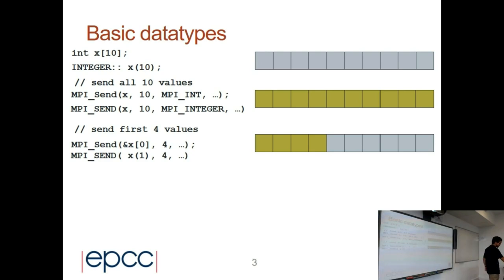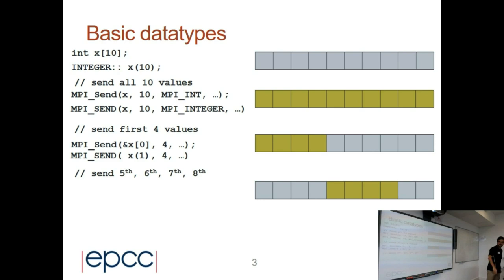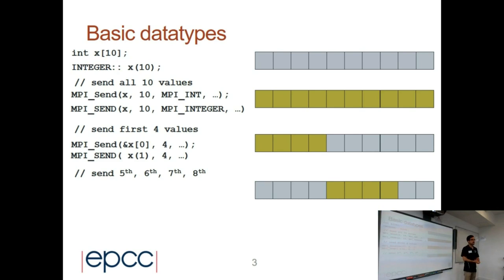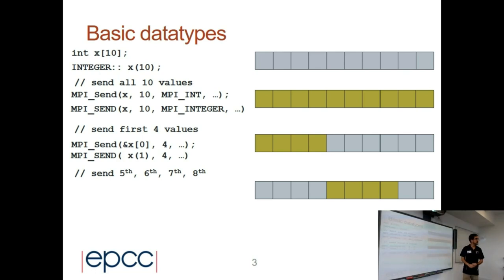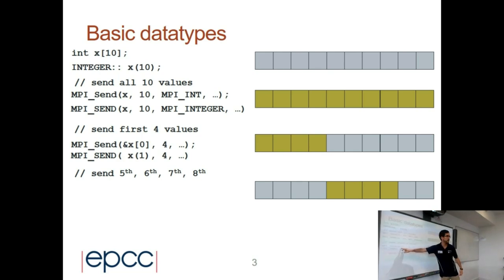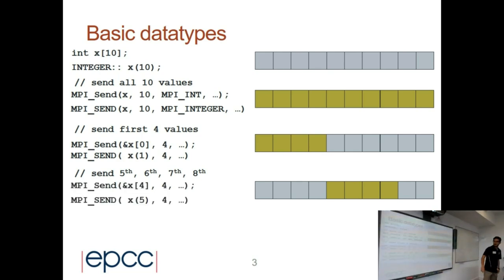But for example, how can I send the fifth, sixth, seventh, and eighth elements of this vector? The count is the same — it's 4 — but what should I modify in that function? To send those elements, I should change the address.